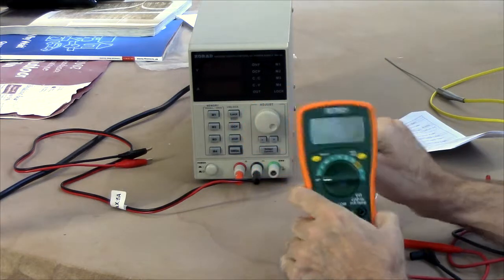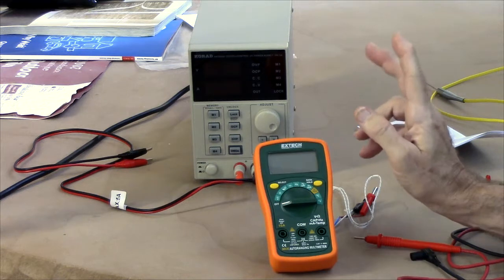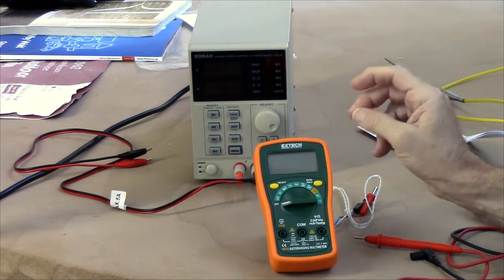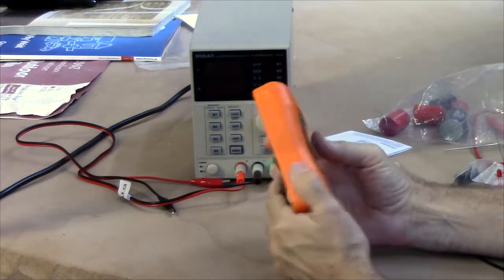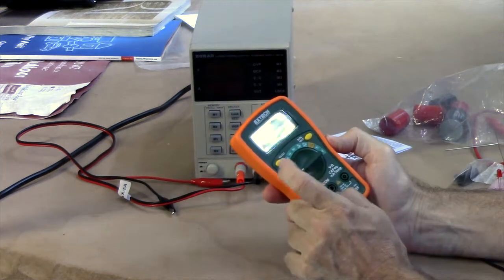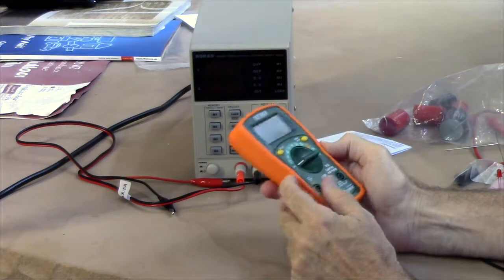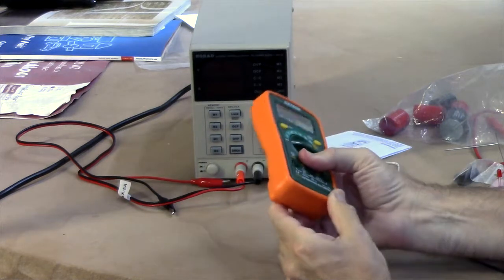But this is an auto-ranging meter, 4,000 count, runs on two AAA batteries, as I recall. You see it's got this sort of pumpkin look going on. It's green with the orange wrapper, whatever that is, nylon or polypropylene. I don't think it's silicone.